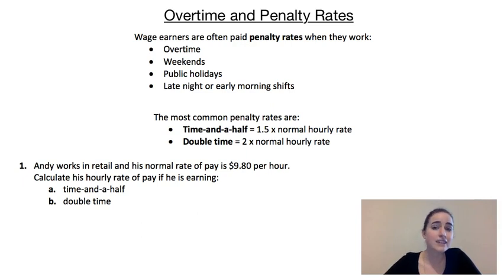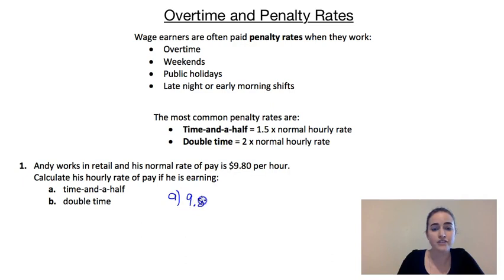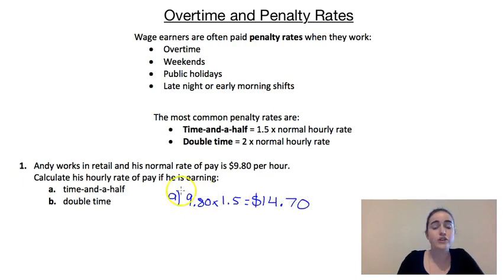We need to calculate his hourly rate of pay if he's being paid at time and a half, and then double time. For time and a half, instead of getting $9.80 for each hour that he works, he's going to get one and a half times this. So for part A, we go $9.80 × 1.5, which gives us $14.70. So instead of getting $9.80 for every hour he works, he's now going to get $14.70.